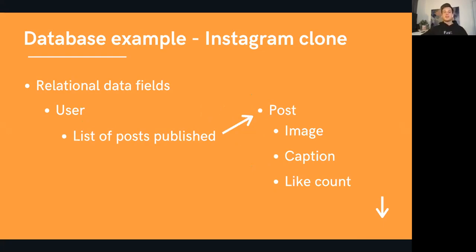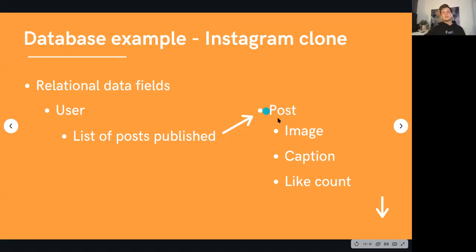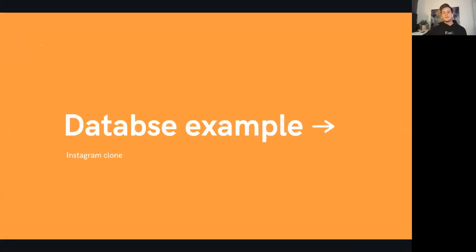The other big benefit is that you can create relational data fields. In our User data type, I'd like to store a list of all the posts published by this user — because when you go to a user's profile, you'd want to see all the posts they've created. What you can do in Bubble is create a data field that stores a list of posts published by this user, linking every post back to this particular user. On the user's profile, you could simply add an element that displays a list of posts created by this user, and because these link together nicely, you can intertwine the data fields connected between the two.